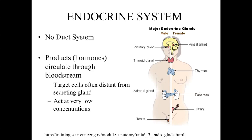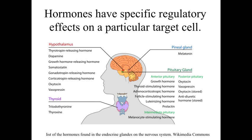Because hormones are not being directed in a very specific way towards their target — they're not being transported down a duct system — these hormones have to work at very low concentrations, since it's unlikely that a large amount of the hormone will reach the target cells. The important thing to keep in mind is that these hormones have a very specific regulatory effect on a particular target cell. They interact with a receptor either on the cell surface or within the cell, and only those cells with the receptor protein are going to be able to respond. The hormone can bathe across a number of other cells, but without the receptor, those cells will not respond.